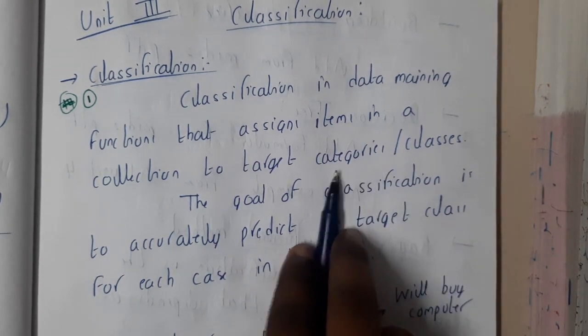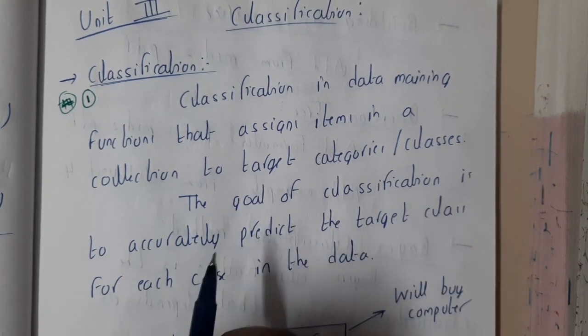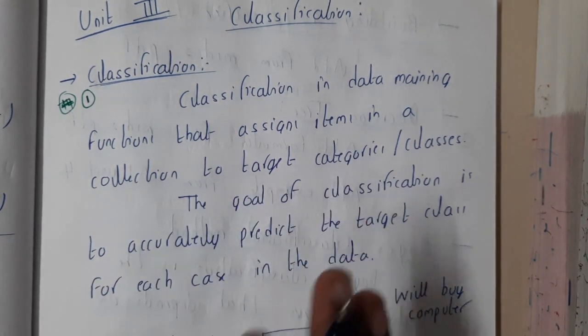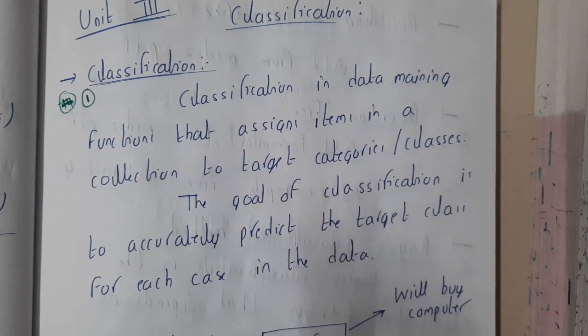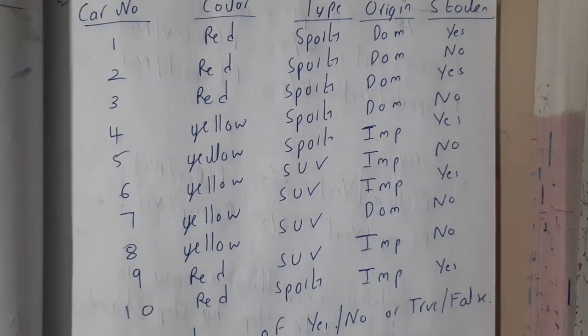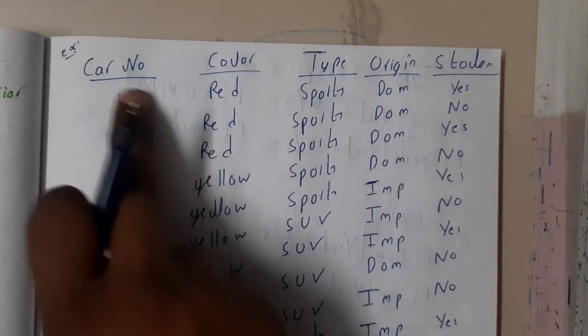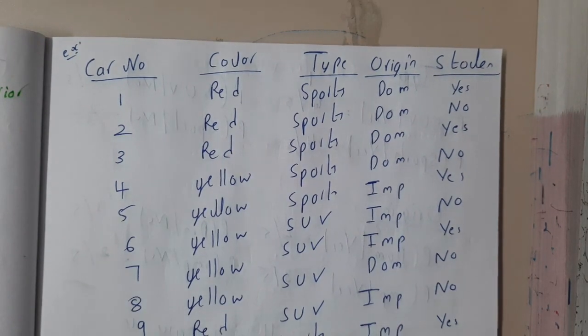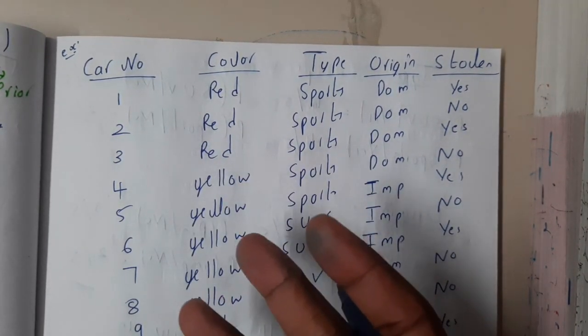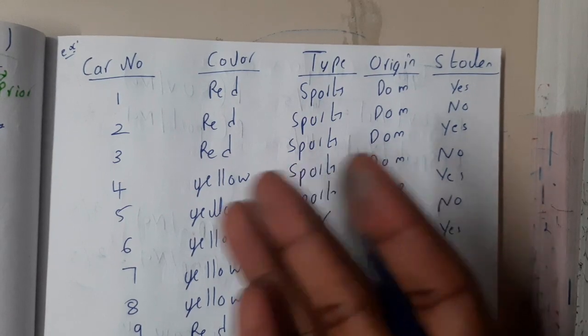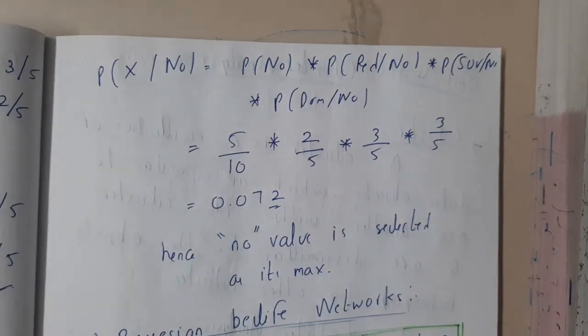Basically here you will be having some labeled data. So this is our input data using which you will create something called a classifier.